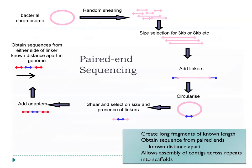One approach to get around this is paired-end sequencing, where you take the bacterial chromosome, shear it, size-select for relatively large fragments — say 3 kilobases or 8 kilobases in length — and add linkers. You then circularise those fragments and, with some clever chemistry, chop out the DNA close to your linkers to get a little bit of sequence from either end of your starting molecule. So you get a short sequence, a linker, then another short sequence, and you know those two sequences are, say, 3 kb or 8 kb apart in the genome.